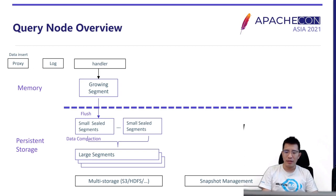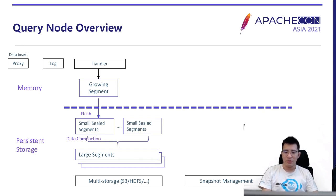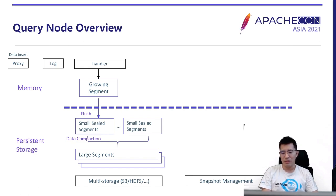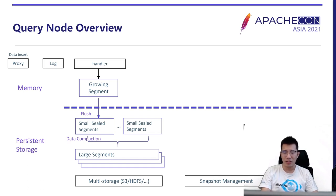In Milvus, we have a component called the query node, responsible for receiving and responding to all requests from user applications. Data is first ingested into log brokers, then consumed into memory as a growing segment. The growing segment can be queried but may not be efficient. Once the size of the growing segment reaches a predefined threshold, we seal it to immutable and flush it to persistent storage as a sealed segment. We also perform periodic data compaction to merge small segments into larger ones.